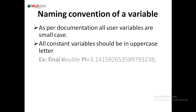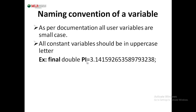For example, if you want to represent the pi value in your program — pi equals to 3.145. You need to declare it as a double, and if you don't want to change this value during execution of your program, you need to declare it as final. So that it becomes a constant variable, and all constant variables must be declared with capital letters.